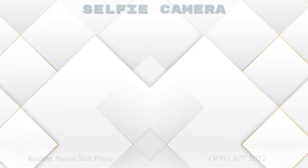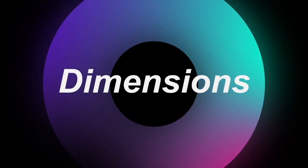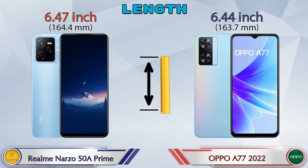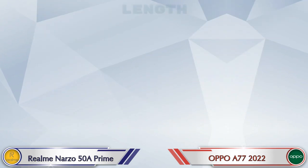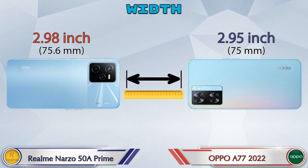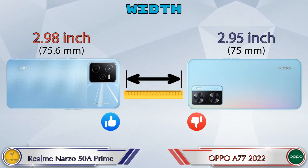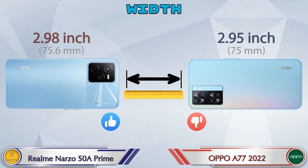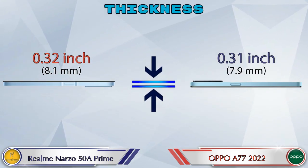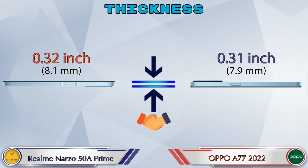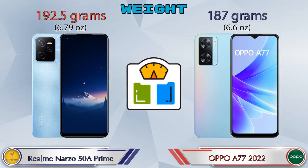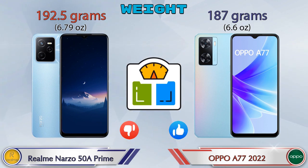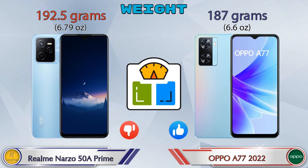Now let's check the dimensions. Length: the 50A Prime is 6.47 inches and the A77 2022 is 6.44 inches. Width: the 50A Prime is 2.98 inches and the A77 2022 is 2.95 inches. Thickness: the 50A Prime is 0.32 inches and the A77 2022 is 0.31 inches, which is almost similar. Weight: the 50A Prime is 192.5 grams and the A77 2022 is 187 grams.